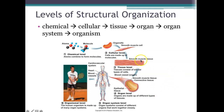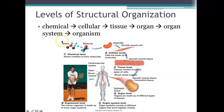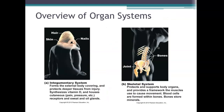Levels of structural organization: cells that come together to perform some action make up a tissue — for example, muscle tissue. Tissues make up organs, so muscle tissue comes together to form the heart. Organs work together to make organ systems, and organ systems work together to make an entire organism. That's the hierarchy of structural organization in anatomy.